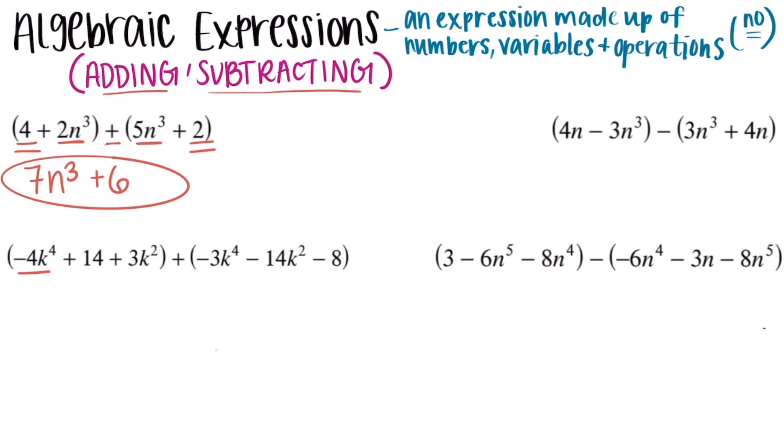Moving on to number 2, looks a little more complicated because we have a couple more terms. But starting with that negative 4k to the fourth, you always want to start with your largest exponent. So k to the fourth, you can see, is our largest exponent here. And so negative 4 and then negative 3 are going to combine to get negative 7 with their like term, which is k to the fourth. Then we're going to move on to our next highest, which is squared, k squared. So we have a positive 3k squared and a negative 14k squared. So positive 3 minus 14 is going to get us a negative